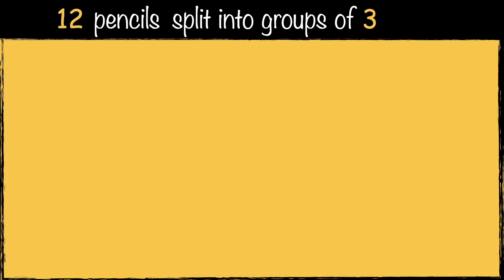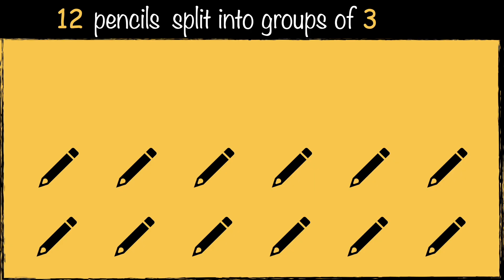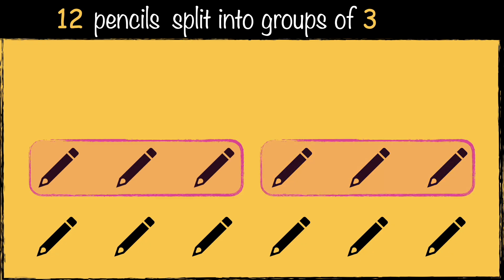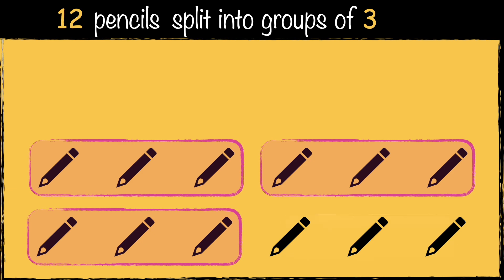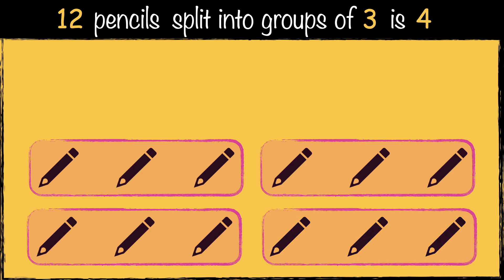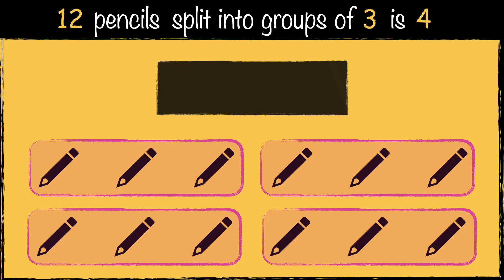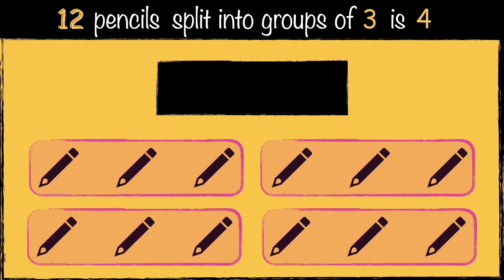Here's another example. We have 12 pencils and we need to organize them into groups of three for the classroom tables. How many groups of three can we make? One, two, three, four. We've made four groups of three using 12 pencils. This is how we write it as a calculation: 12 divided by three equals four.